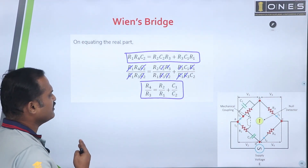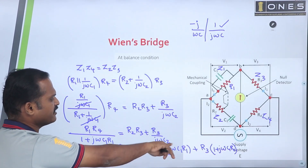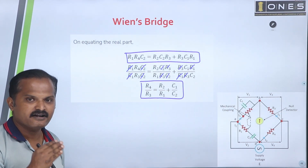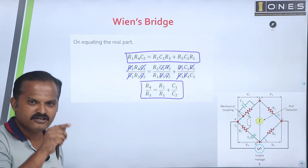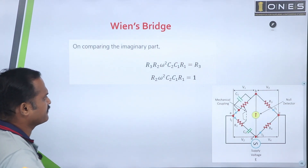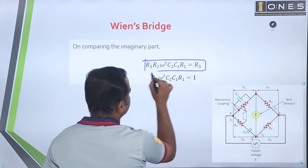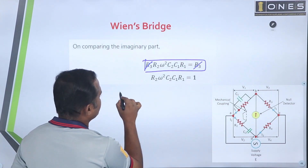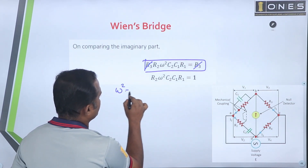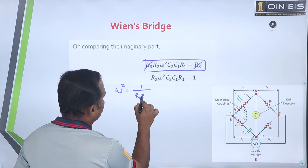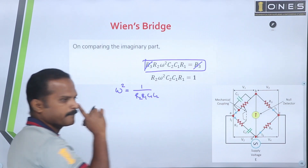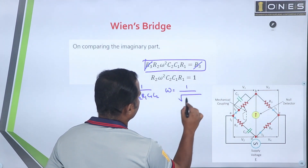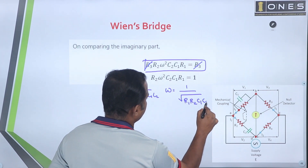Now, from the real part we get the resistance balance equation. From the imaginary part, we get the frequency component. Taking the imaginary part, we derive: omega-squared equals 1 over (R2·R1·C1·C2), so omega equals 1 over the square root of (R1·R2·C1·C2).